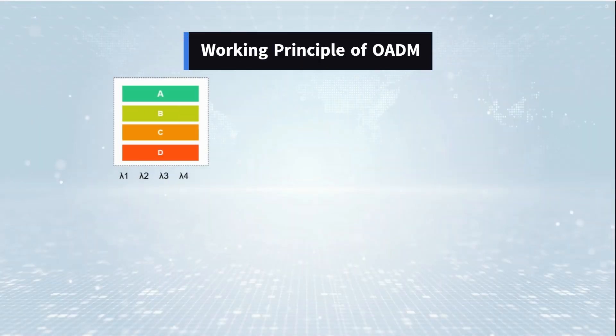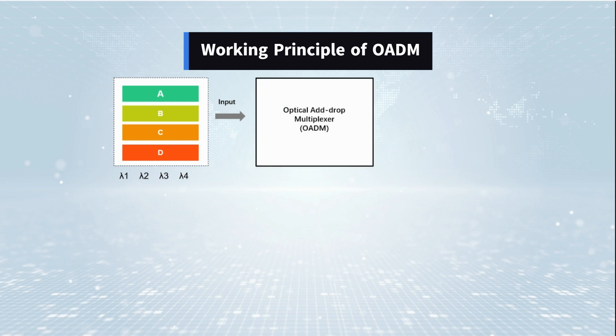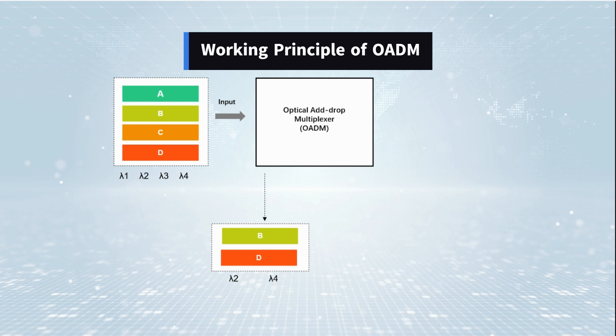The working principle of OADM is: the input signal includes four wavelength channels. The second and fourth wavelengths are selectively separated and dropped to the local through OADM. Different local wavelengths are added to the OADM and multiplexed with other wavelengths out through the output port of the OADM.